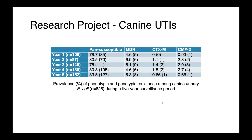Looking at that same five years of data on a susceptibility profile basis rather than drug-by-drug, approximately 80% of our isolates were susceptible to all drugs tested, which is really fantastic news. Somewhere around 5% were multi-drug resistant — resistant to three or more classes of antibiotics. We did identify some broad-spectrum beta-lactamase producers: some CTXM enzymes in roughly 0 to 1.5%, and CMY2, an AmpC beta-lactamase, with a slightly higher frequency.